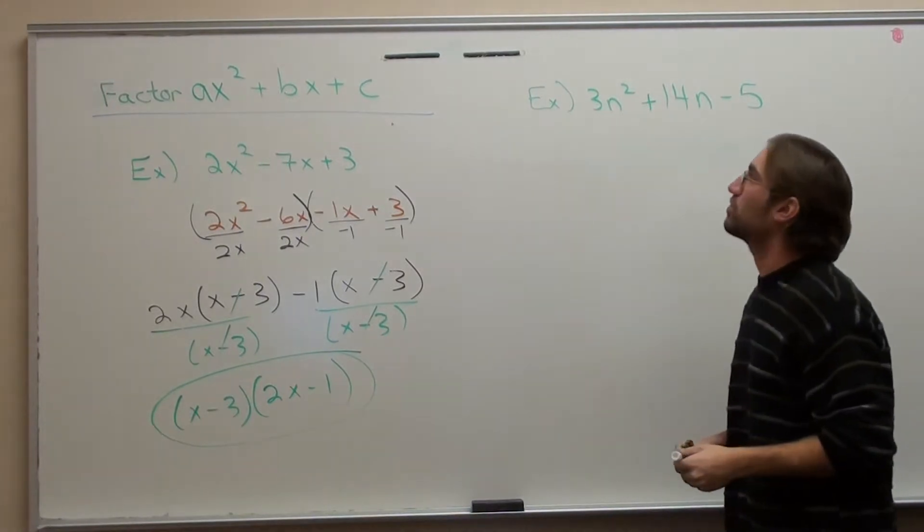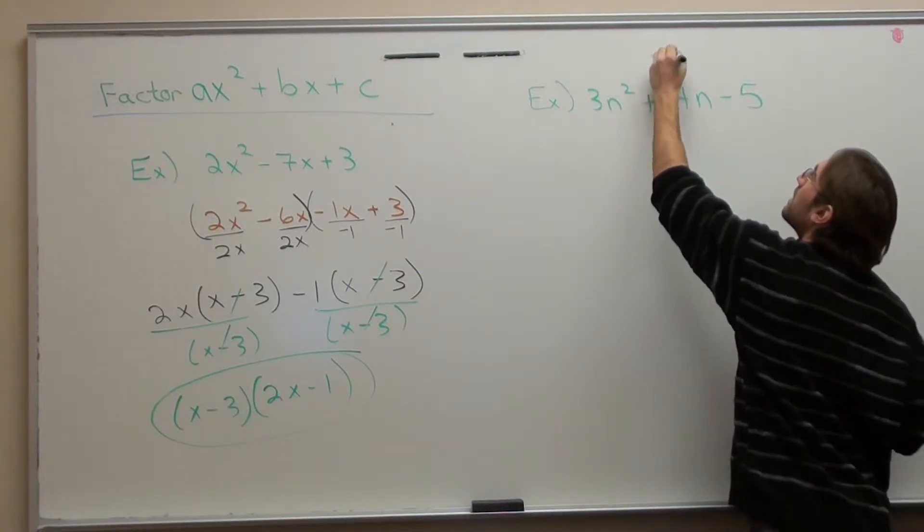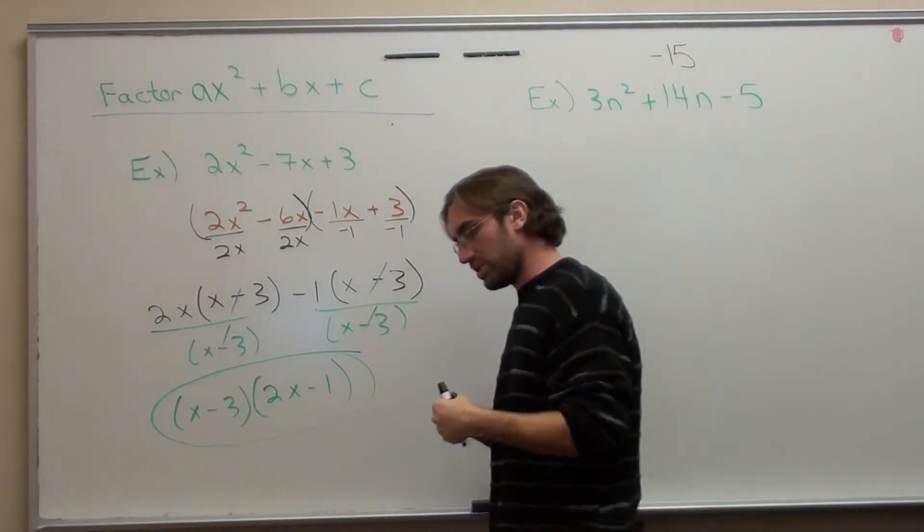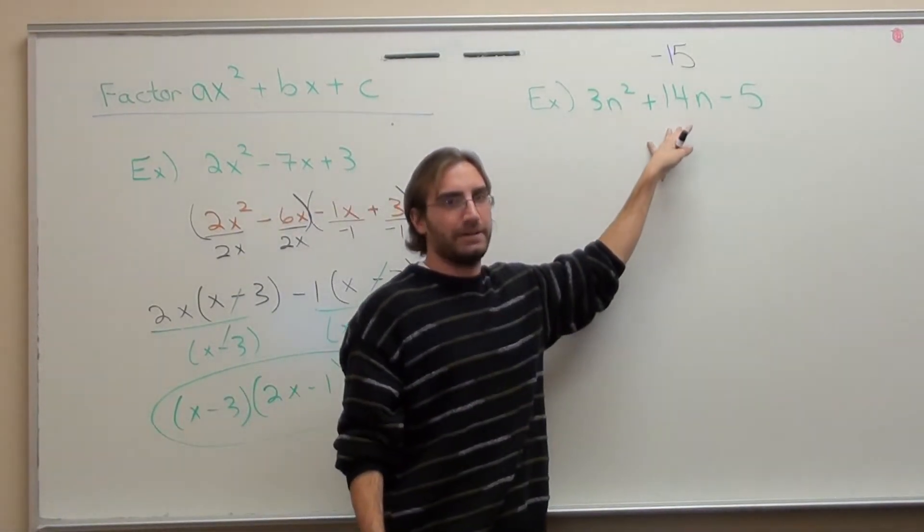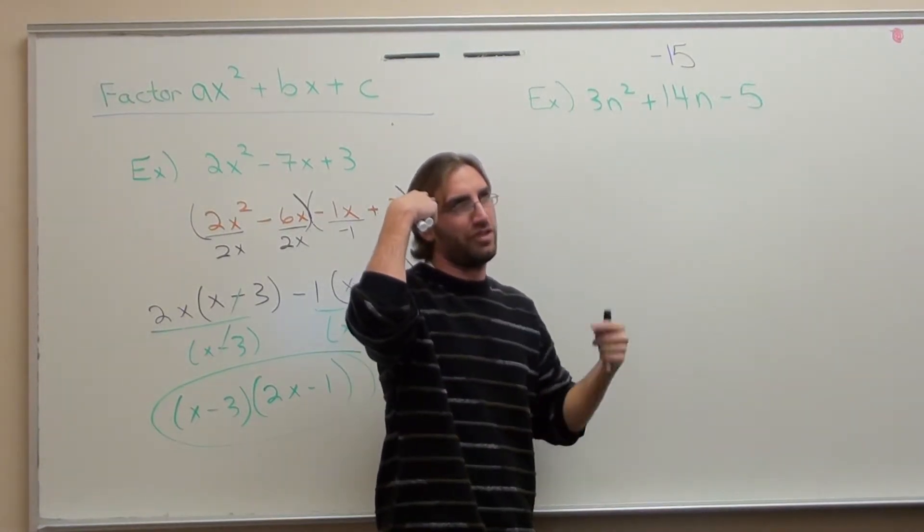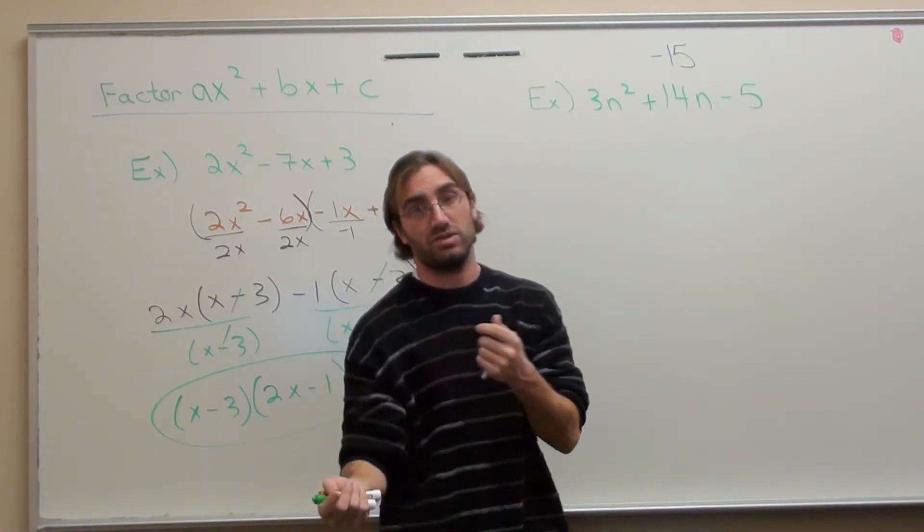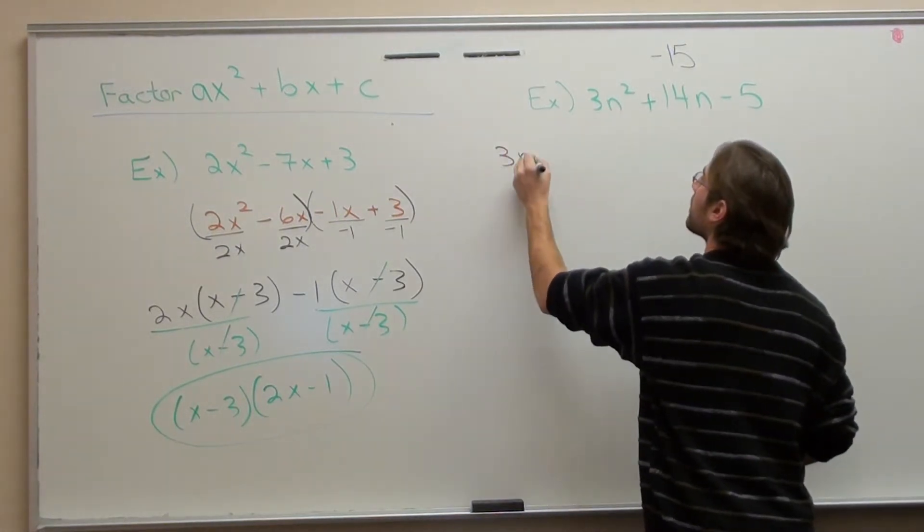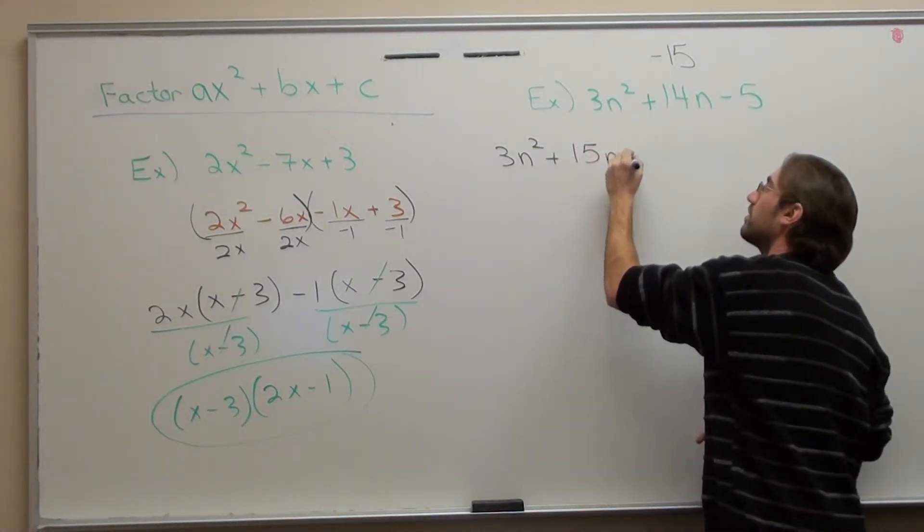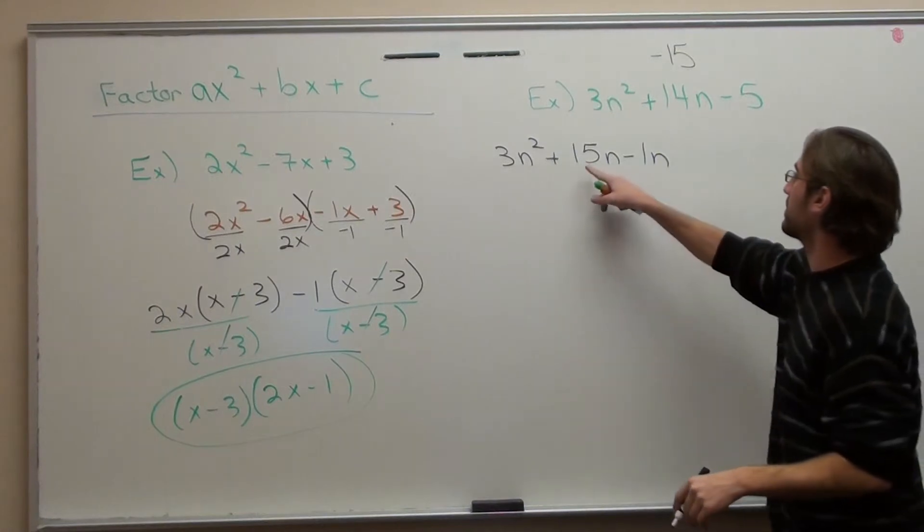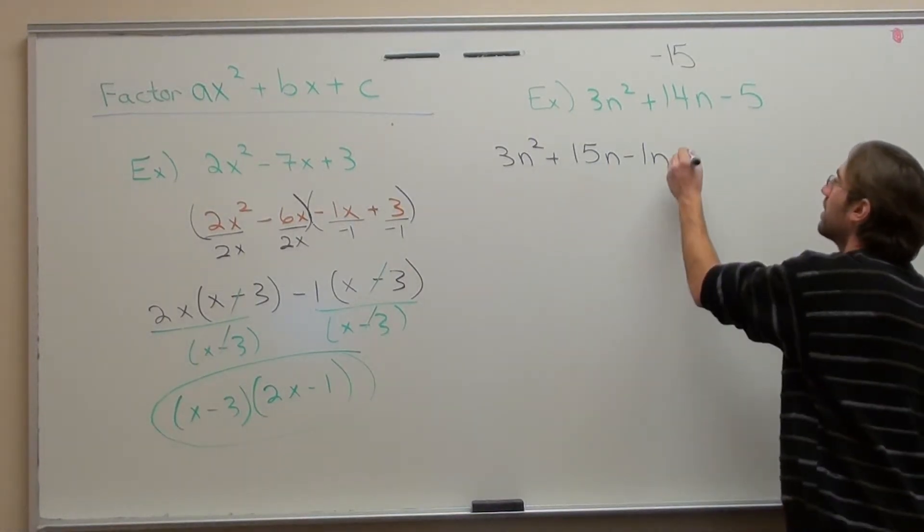Next one. 3n² + 14n - 5. So here's how I'm going to do it. 3 times -5 is -15. I've got to think of two numbers that multiply to be -15 but add to be 14n or 14. And the only thing I can think of is 15 - 1 is 14, and 15 times -1 is -15. So that's what I'm going to do.